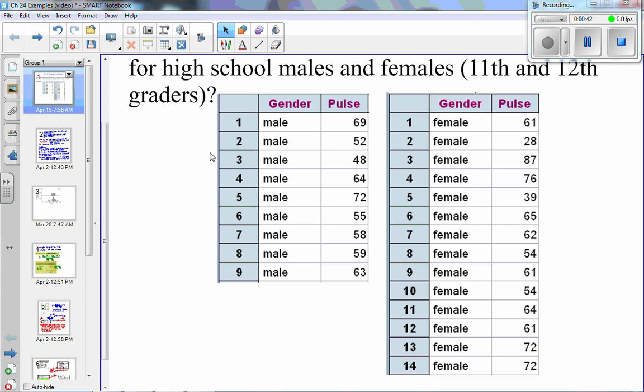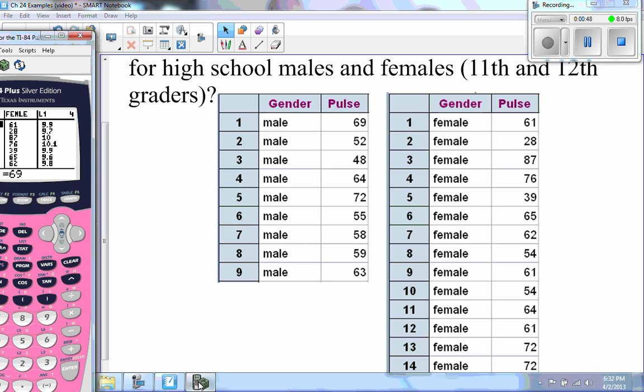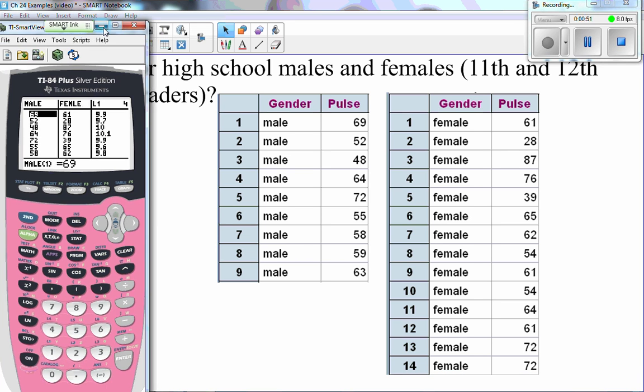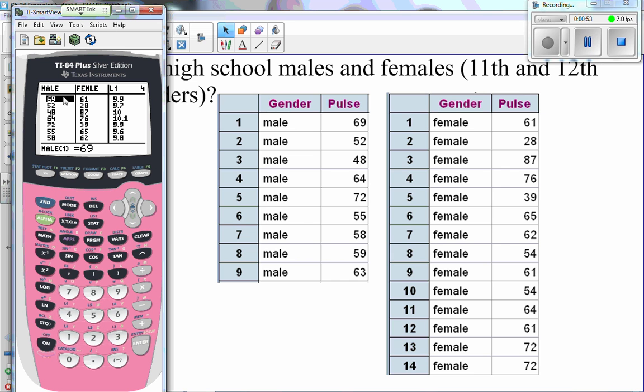So you'll need in two different columns, one for the male pulse data and one for female. You can do yours in L1 and L2 if you want. I actually named a column male and female, but that only lets you do five letters. So go ahead and take a minute to do that.